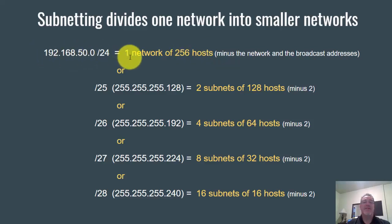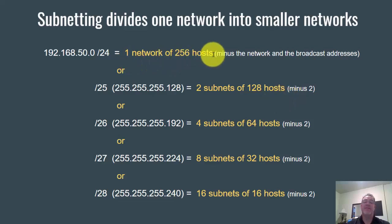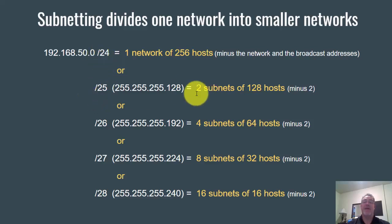Subnetting is asking: what if I took this one network of 256 hosts and divided it into two networks of 128 hosts? Yes, you can. You can take this one network of 256 hosts and by changing the subnet mask from /24 to /25, you could make two subnets of 128 hosts.